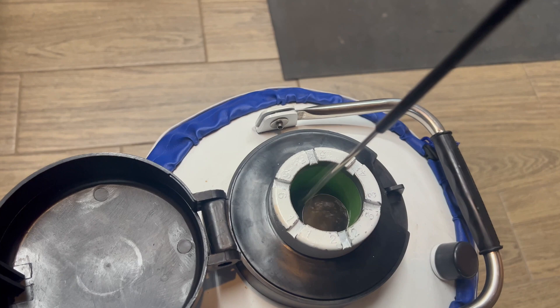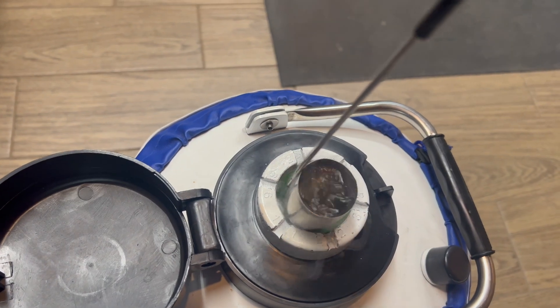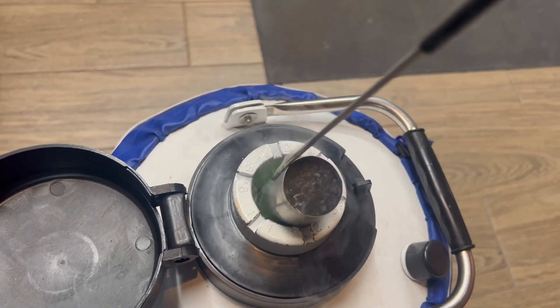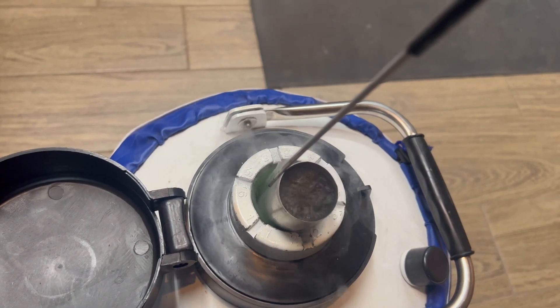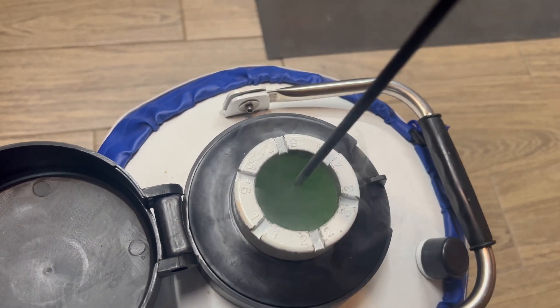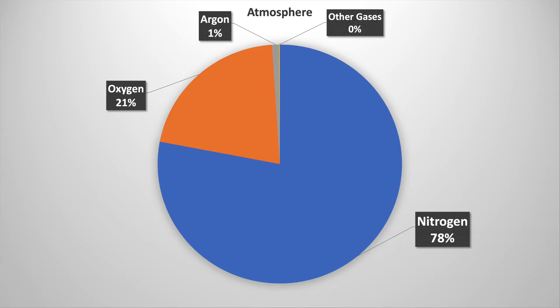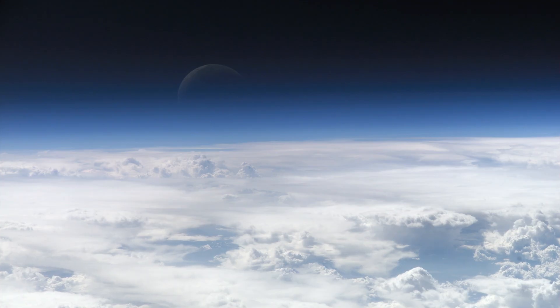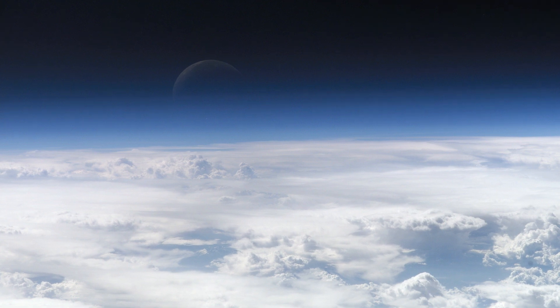In today's video, we are taking a look at the element nitrogen. Nitrogen is a common element — it surrounds us every day. Nitrogen is the 7th most abundant element in our galaxy. The atmosphere consists of 78% nitrogen, 21% oxygen, the rest containing 0.9% argon, and 0.1% other gases. The gaseous form of nitrogen makes up most of the nitrogen found on our planet.